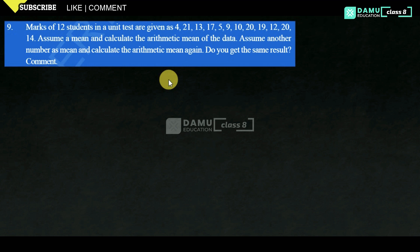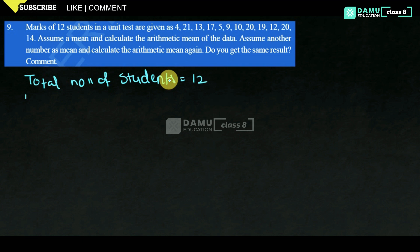Deviation is nothing but fluctuating values from the actual values. The total number of students is 12. Let's write the marks of the 12 students in ascending order.